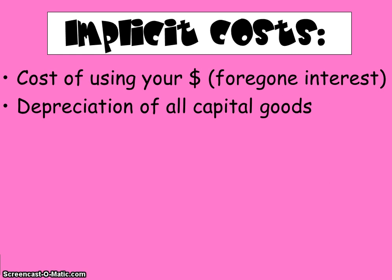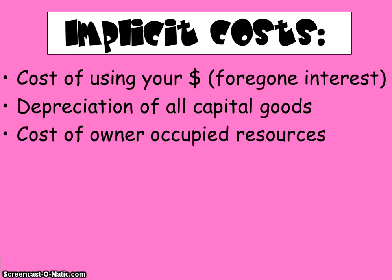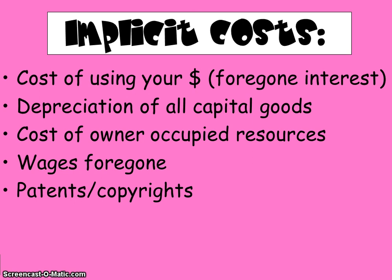Depreciation of all capital goods is an implicit cost — as you use that equipment, it depreciates. The cost of owner-occupied resources, like if you work out of your home, there's an implicit cost there. Foregone wages — if you own a company, you could be earning money working for someone else, so you give up the chance to earn wages in a different job. Patents and copyrights have implicit costs, just thinking about the value of brand names — for example, how much do you think the name Coca-Cola is worth? There's definitely an implicit cost there.